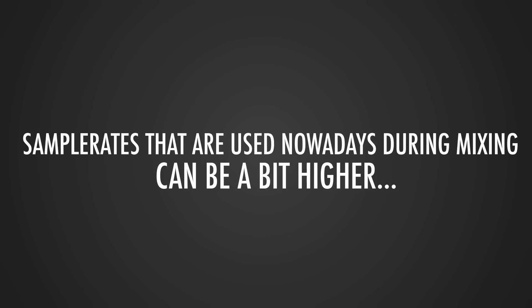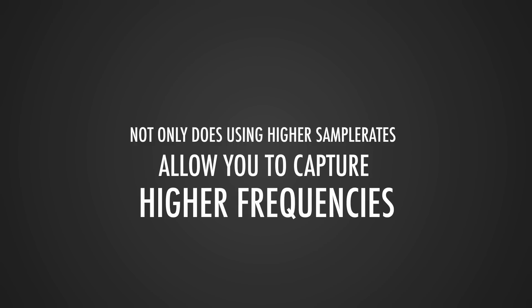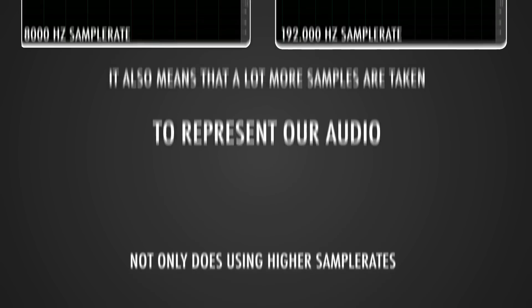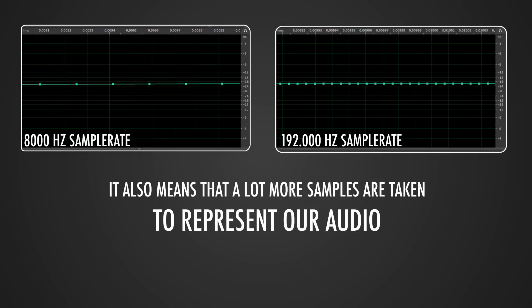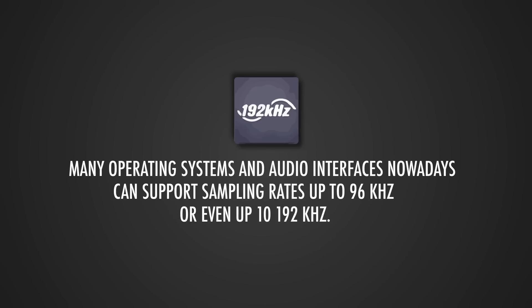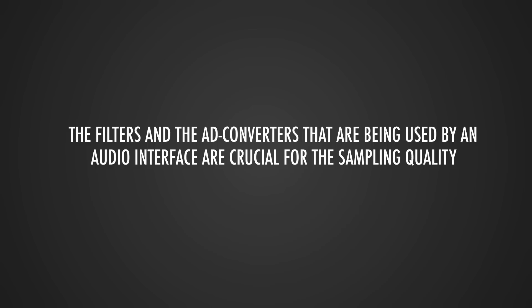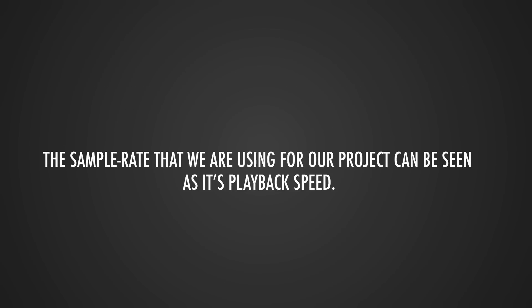Common sample rates used nowadays can be higher. Not only does this mean we can theoretically record higher frequencies, but it also means we've got a lot more samples representing our audio. Many operating systems and audio interfaces can now support sampling rates up to 96 kHz or even 192 kHz, giving much higher audio quality and processing options. The filters and AD converters used by an audio interface are crucial in determining the quality of that conversion.